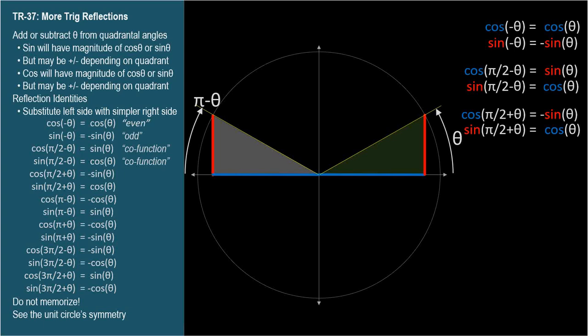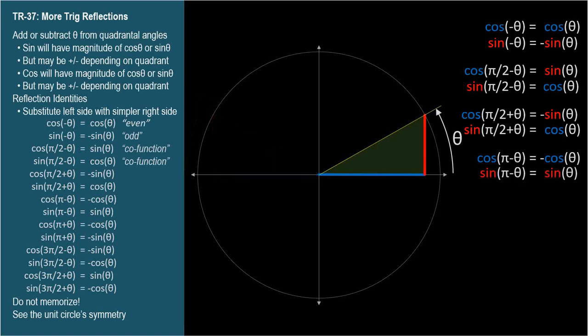The cosine of pi minus theta equals negative cosine theta — same size, opposite direction. And sine of pi minus theta equals sine theta — same size, same direction. Now let's add theta to pi radians.